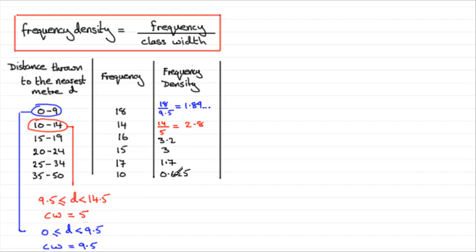Well, these are the results and hopefully you're able to get them right. What we've got here is 16 divided by 5 because this is going from 14.5 to 19.5. This one would be 15 divided by a class width of 5. 17 divided by a class width of 10. And the class width for this last one goes from 34.5 to 50.5, that's a width of 16 units. So 10 divided by 16 gives 0.625.